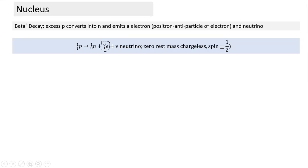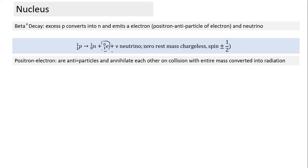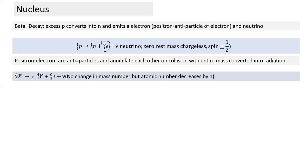In beta plus decay, one proton is converted to a neutron, so the atomic number decreases by 1 while mass number stays the same. Both beta plus and beta minus decay do not change mass number — in beta minus decay atomic number increases by 1, and in beta plus decay atomic number decreases by 1.